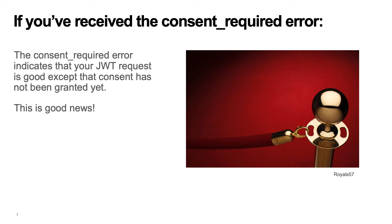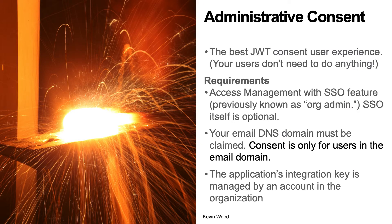If you've received the consent required error, first thing is congratulations. Receiving this error when you're using the OAuth JWT grant flow indicates that your application is creating the JWT request correctly — that covers a lot of software territory. Next, you just need to obtain consent for the user your application is impersonating, and you'll be ready to make API calls.